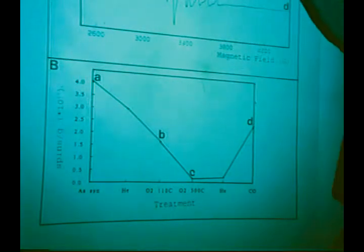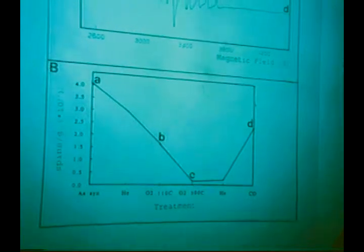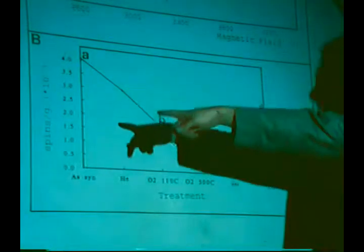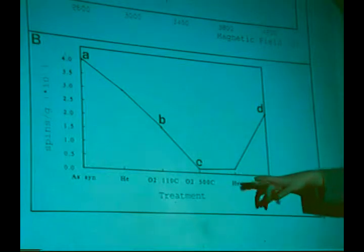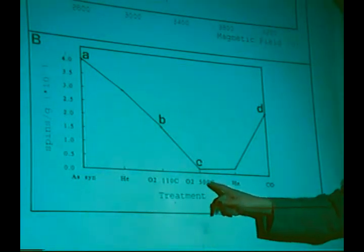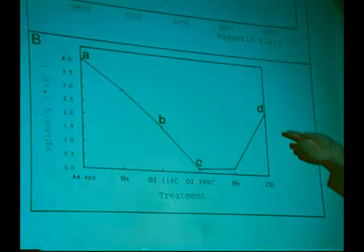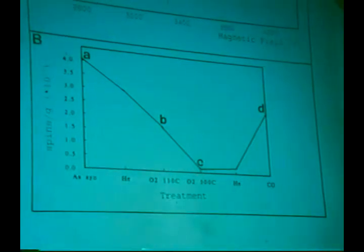We have now quantified the spectra. This means double integration, then comparing it with a reference standard where you know exactly the spin density. Here I've given the spins or grand spin density as a function of the treatment. One can see that spin density of vanadium 4+ is decreasing with increasing oxidation temperature. And then by reduction you can regenerate partially the amount of vanadium 4+. It's important to stress that the amount of vanadium 4+ you can probe by EPR is only 10% of the total vanadium content. So with EPR you are only probing the magnetically diluted fraction of vanadium 4+.